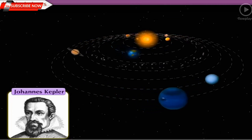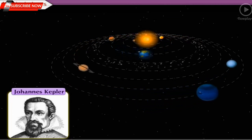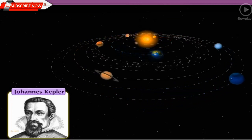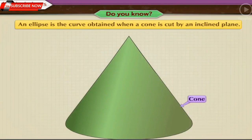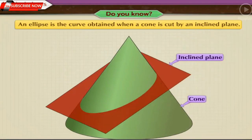Before we proceed to study these laws, let us first understand what is an ellipse. Do you know? An ellipse is the curve obtained when a cone is cut by an inclined plane.